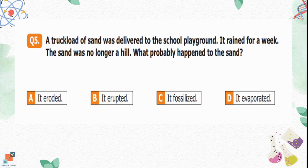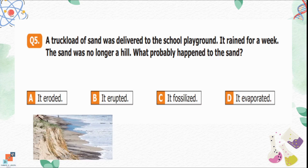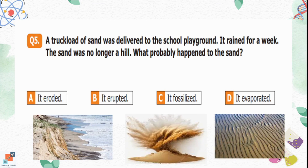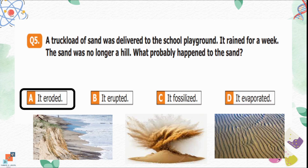Question number 5: A truckload of sand was delivered to the school playground. It rained for a week and the sand was no longer a hill. What probably happened to the sand? Option A is it eroded. Option B is it erupted. Option C is it fossilized. Option D is it evaporated. Option A is the correct option. Sand erosion is a process in which sand is lost due to the combination of water and wind movement. Due to the continuous rain, the sand was eroded from the hill and was no longer in the playground.